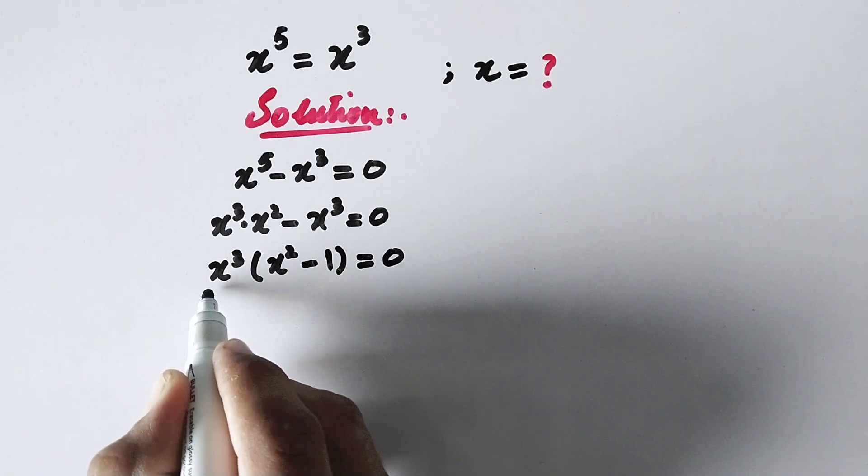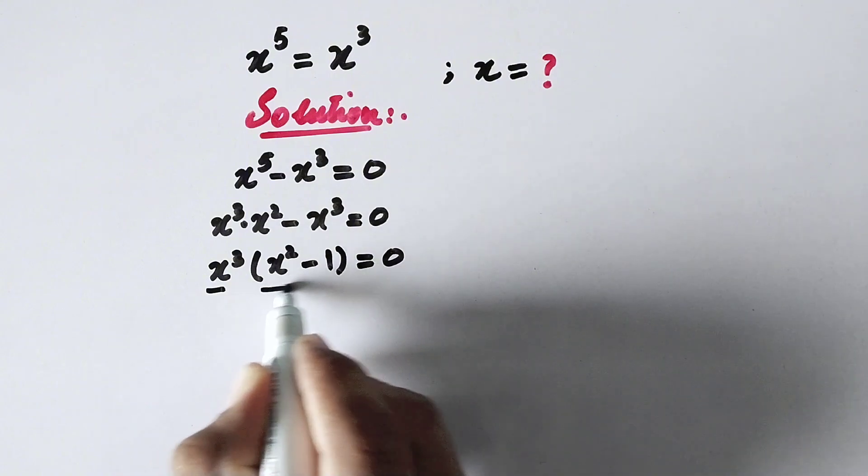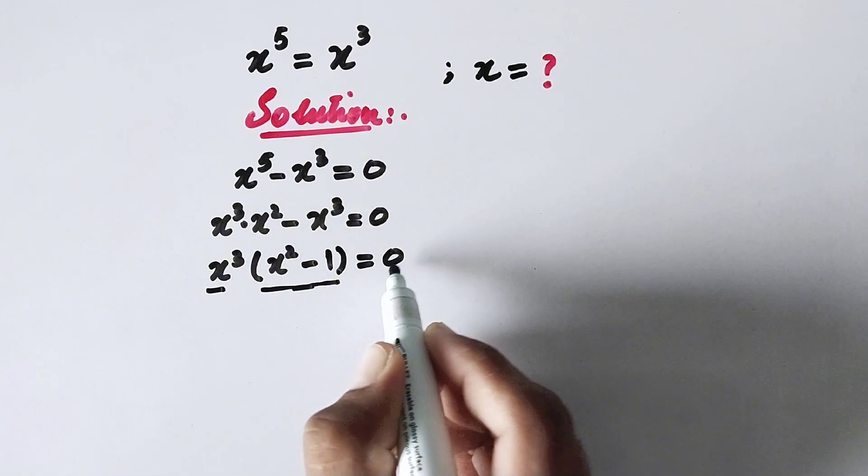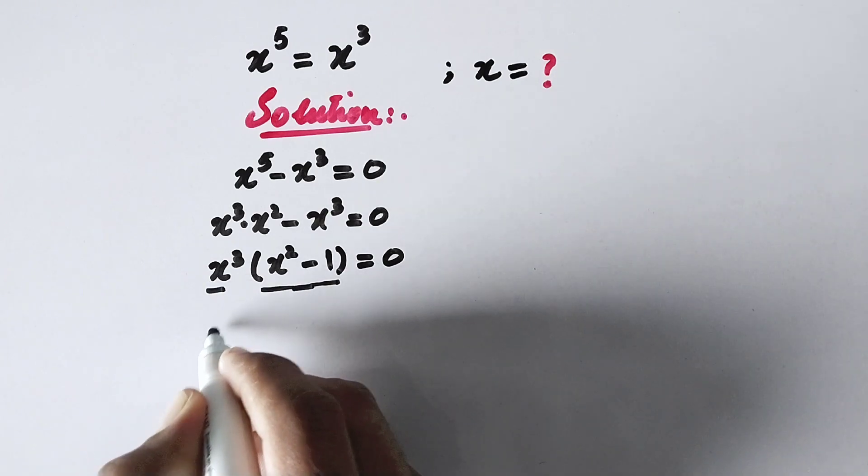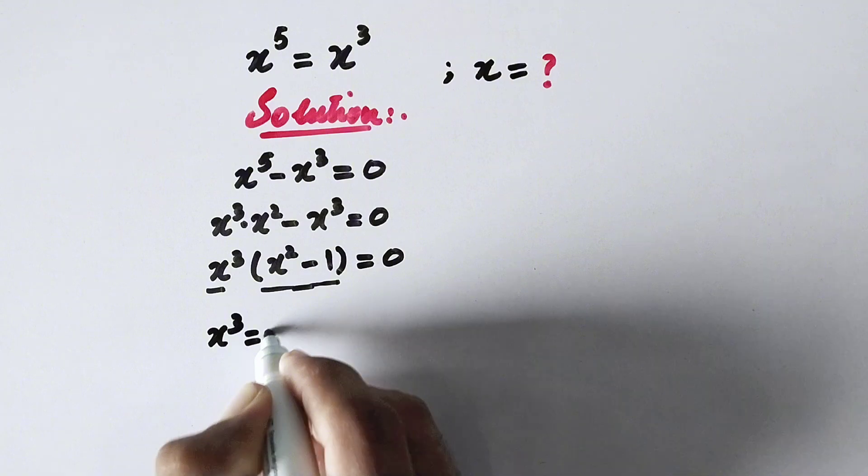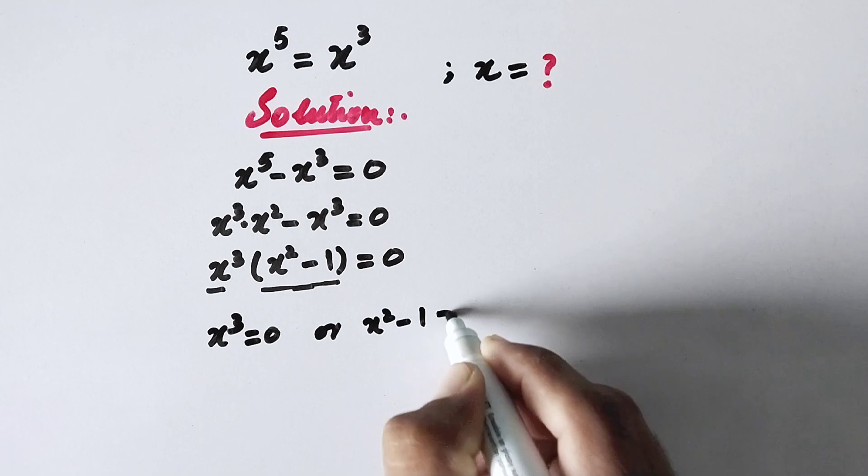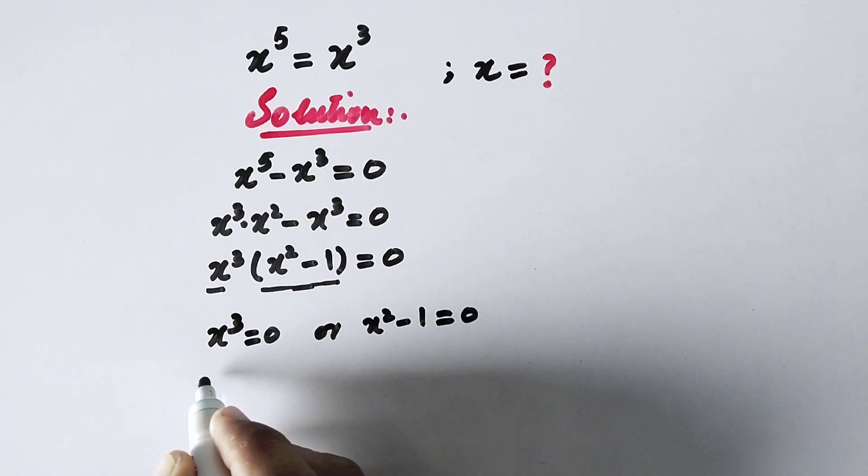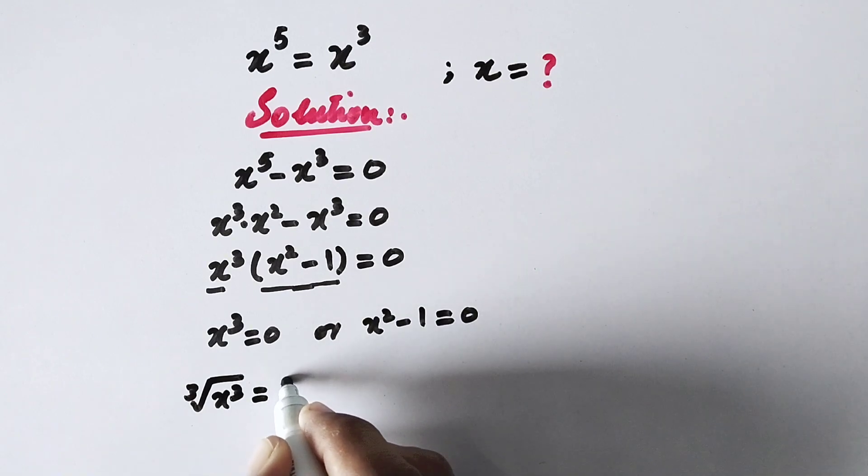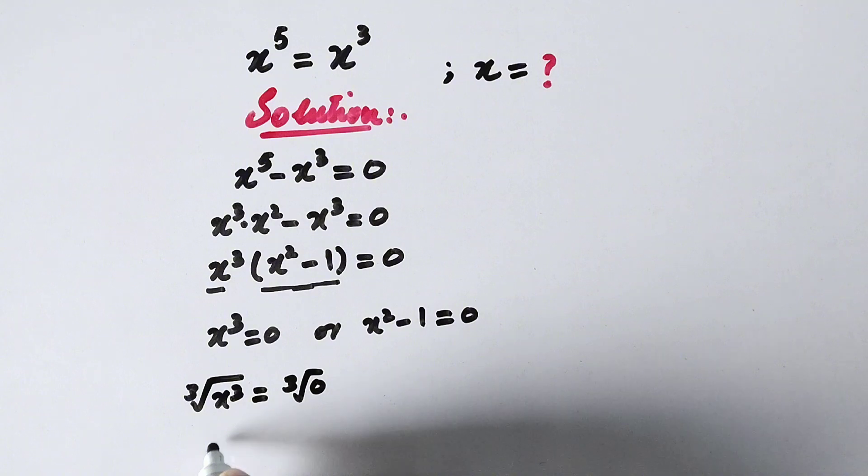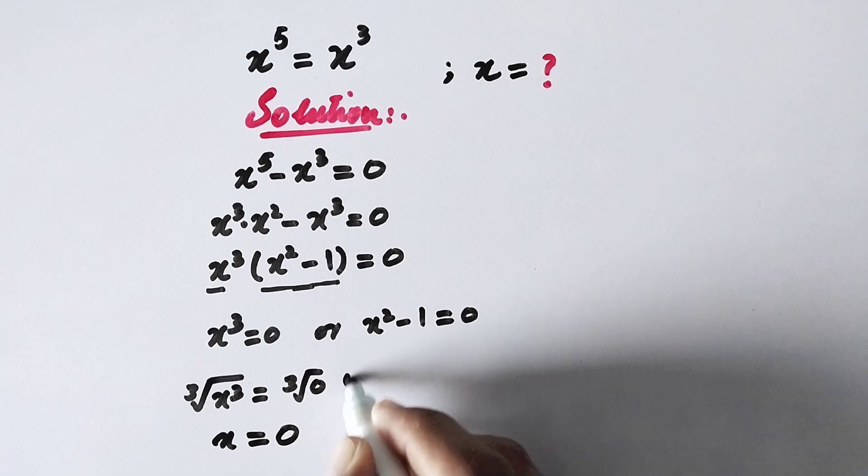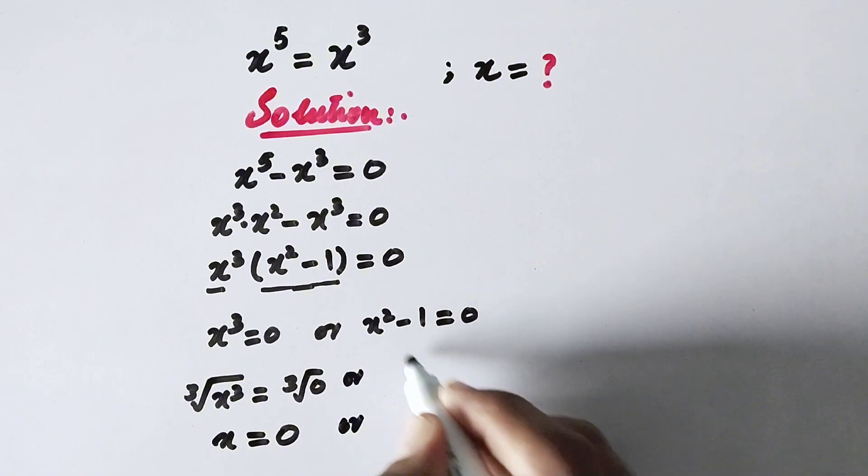Now here we can see that there are two factors that are equal to 0. So we can write them separately like x cubed is equal to 0, or x squared minus 1 is equal to 0. And here to eliminate this cube we will take cube root of x cube, same on right side, cube root of 0. So x will be equal to 0.